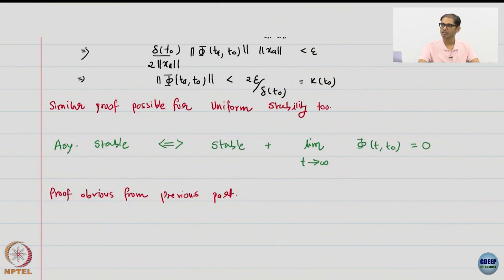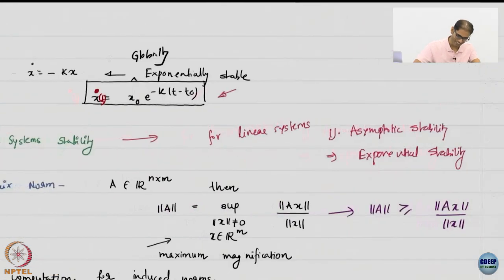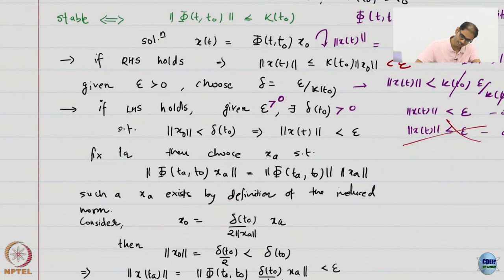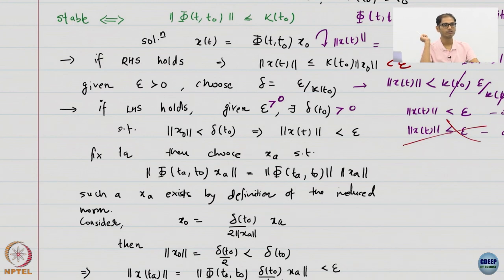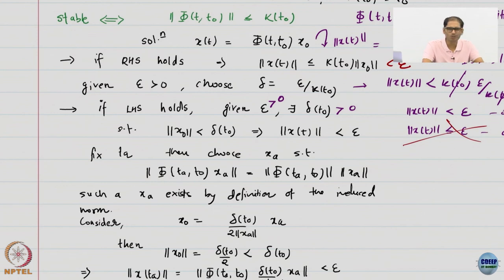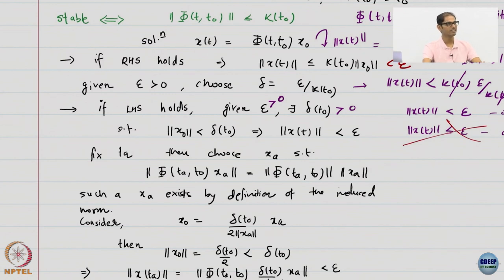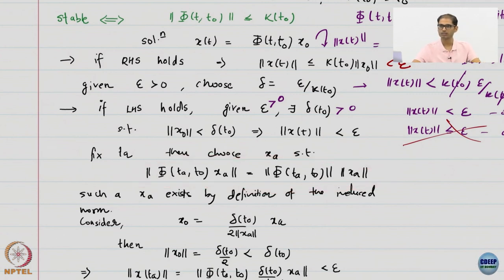So you prove the other side of the argument also. The only thing that is important here is the existence of an XA such that this equality holds. All of this works because R^n is a very nice vector space. We have already said we are working in an inner product linear space where Cauchy convergence equals convergence, so having this kind of property is not unusual.